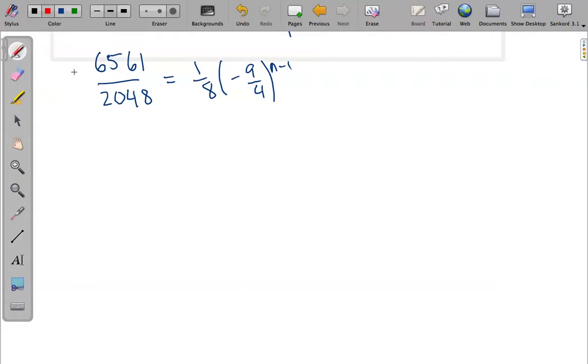So in order to do that, I'm going to multiply this side by 8 and this side by 8, which will cancel that out. And this will become 256. So I have 6561/256 = (-9/4)^(n-1).